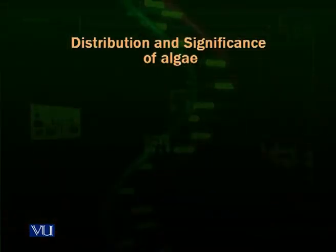So based upon cellular organization, we divide algae into three groups: unicellular algae, multicellular filamentous algae, and colonial algae. Now let's look at the distribution and significance of algae.